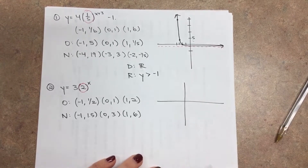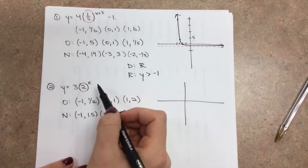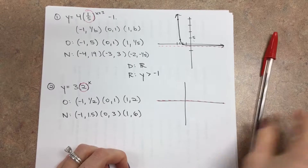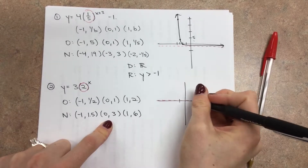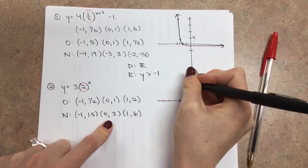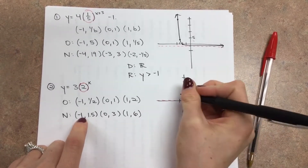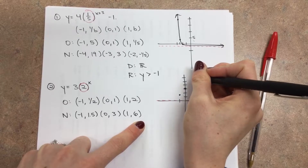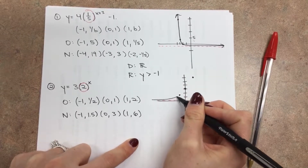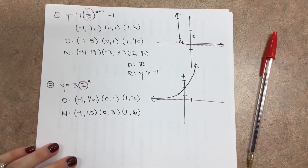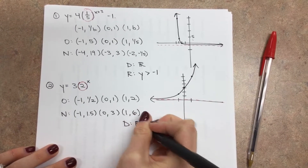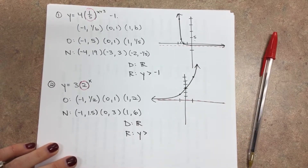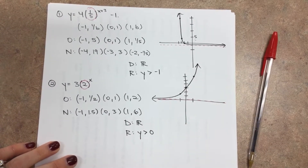Sketch the graph. Remember, the very first thing to plot is your dotted line. If there's no value at the end, assume it's 0 — the default is 0. Plot the three points: negative 1 and 1.5, 0 and 3, then 1 and 6. The graph glides along the dotted line and then starts increasing through these points. Domain for any exponential graph is always all reals. The range is based on the dotted line — y values are above the dotted line, which has a value of 0, so range is y greater than 0.